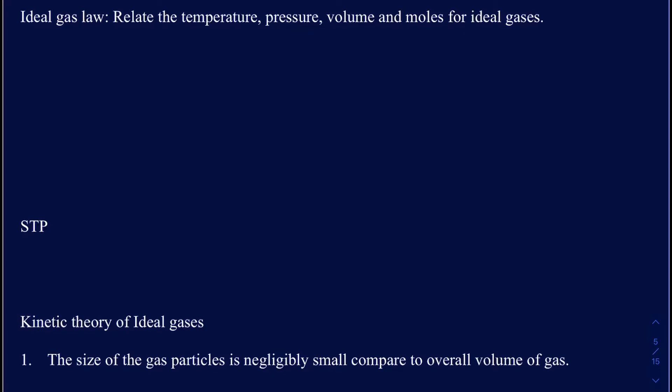When I write down the ideal gas law, it's PV equals NRT, where P is pressure, V is volume, N is moles, R is the gas constant, and T is temperature. Out of those four variables, remember R is actually a constant, which is 0.0821 atmosphere·liters·moles⁻¹·Kelvin⁻¹.